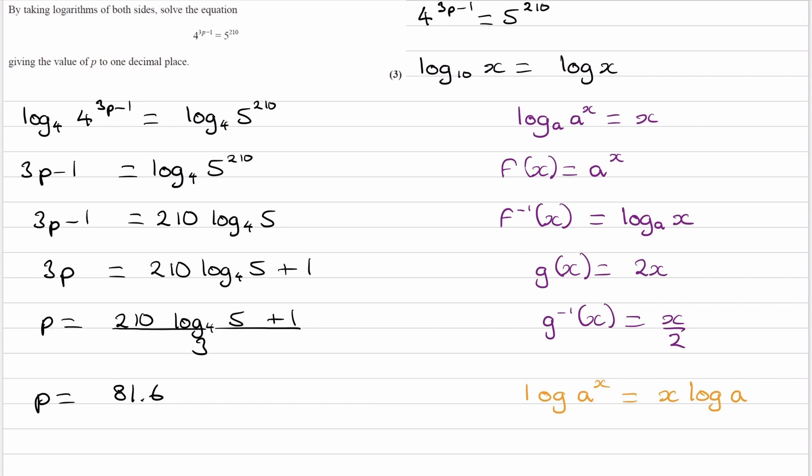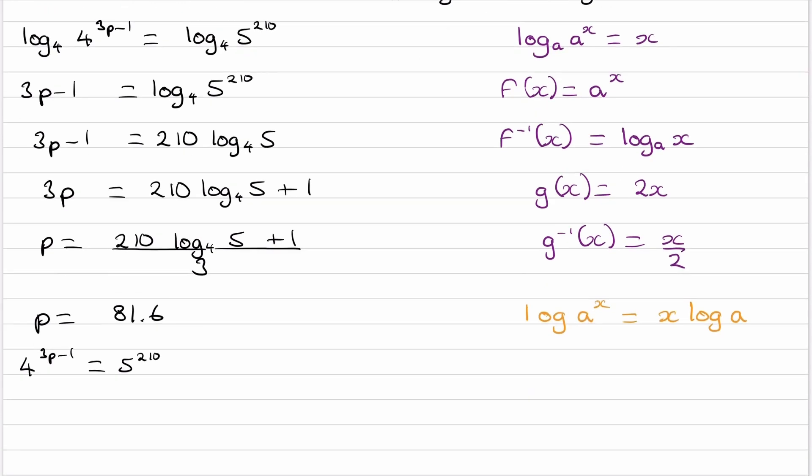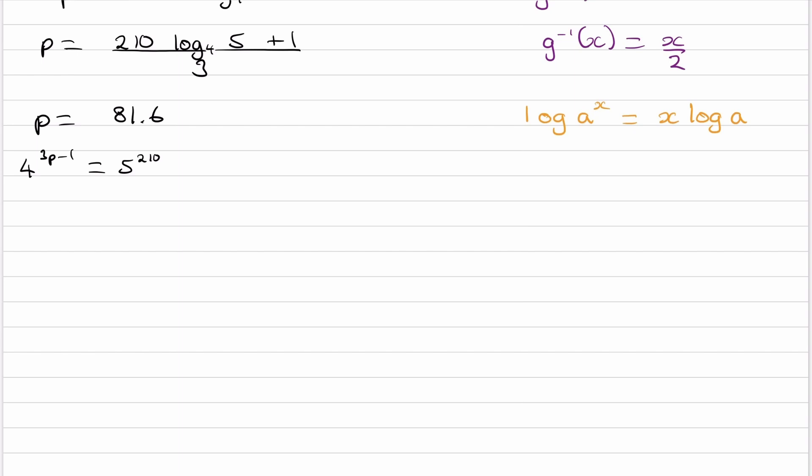So then the other way that you would do this is then to take log to the base 10 of both sides. That was what I showed in the beginning. So let's also do it that way, just so you can see exactly how that works. So we have 4 to the power of 3p minus 1 is equal to 5 to the power of 2.10. So we're taking log to the base 10 of both sides. So this then becomes log of 4 to the power of 3p minus 1 is equal to log of 5 to the power of 2.10.